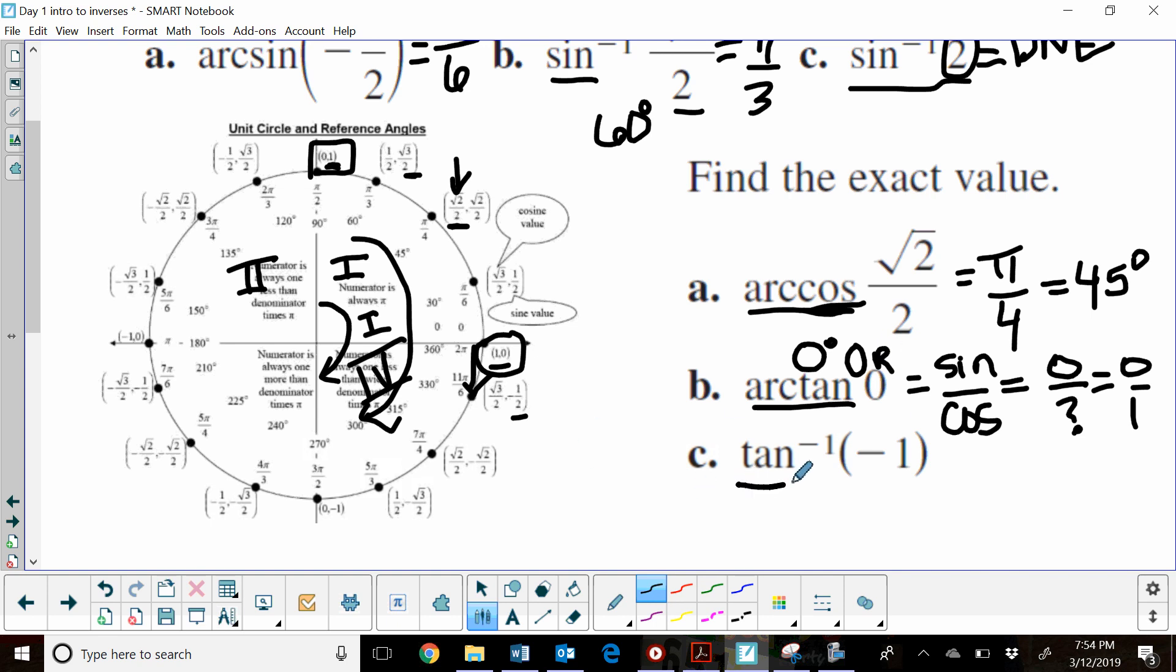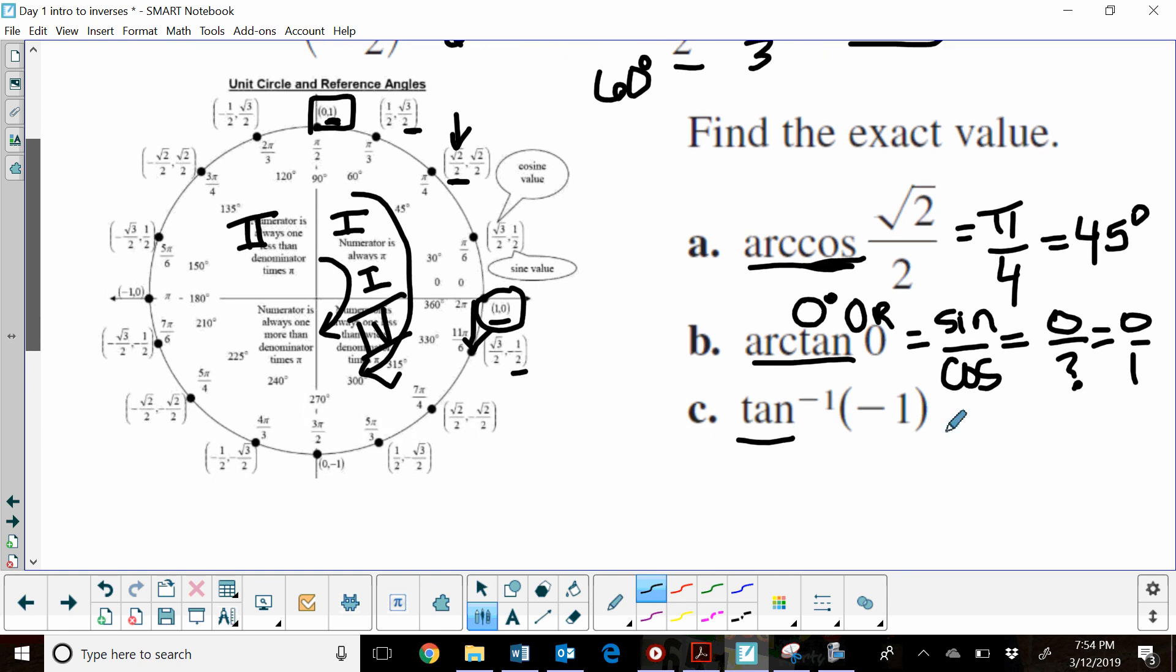Now let's look at where tangent is negative 1. Tangent is negative 1 where we get a sine over a cosine. How can we get a negative 1 when we have the ratio of sine to cosine? They have to be the same values. Sine and cosine have to be equal to get a positive 1. We want a negative 1, so that means we're looking for where one of these is negative—either sine or cosine is negative, but the absolute values are the same.